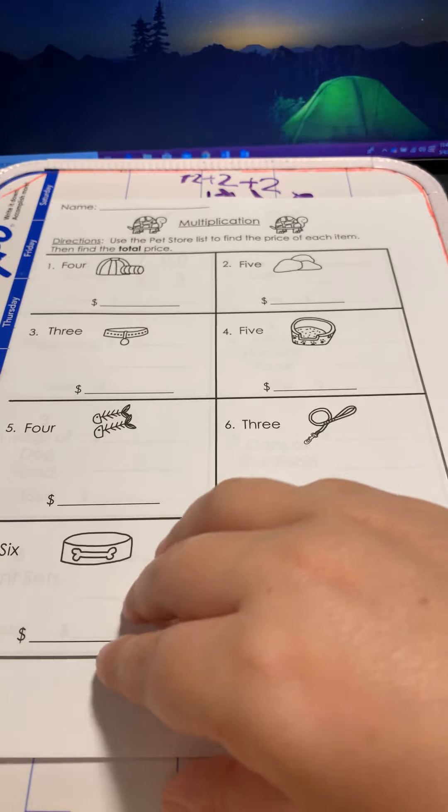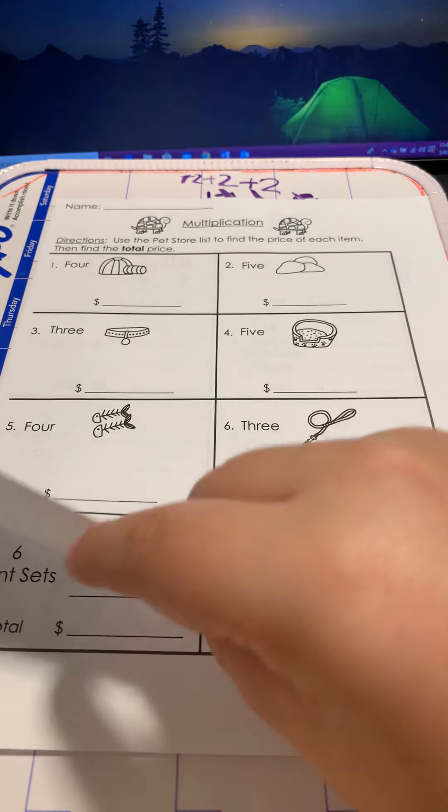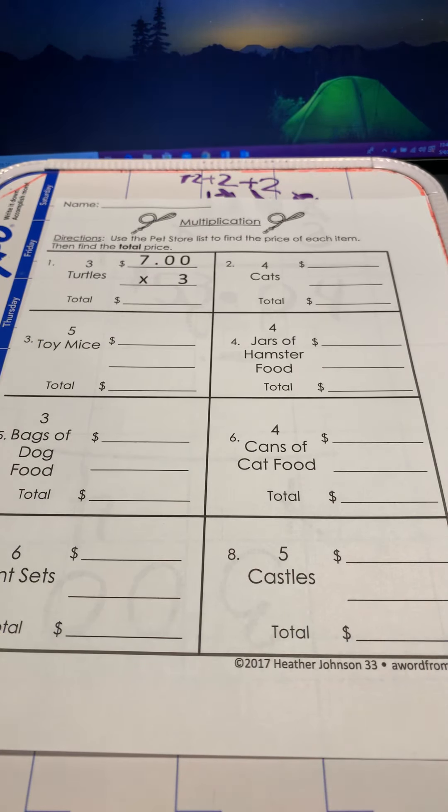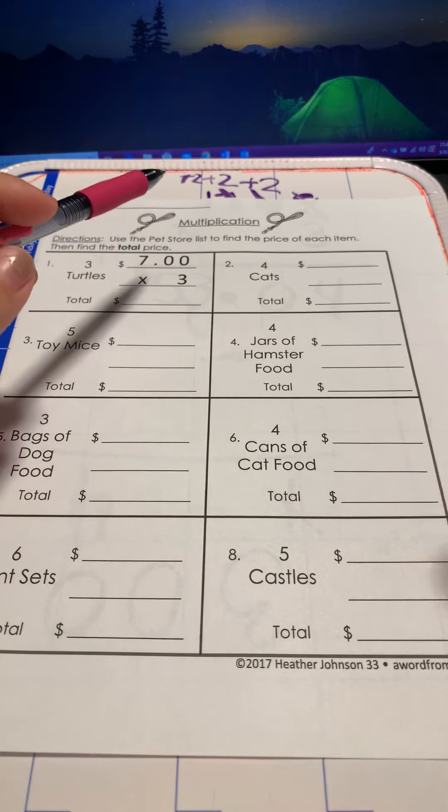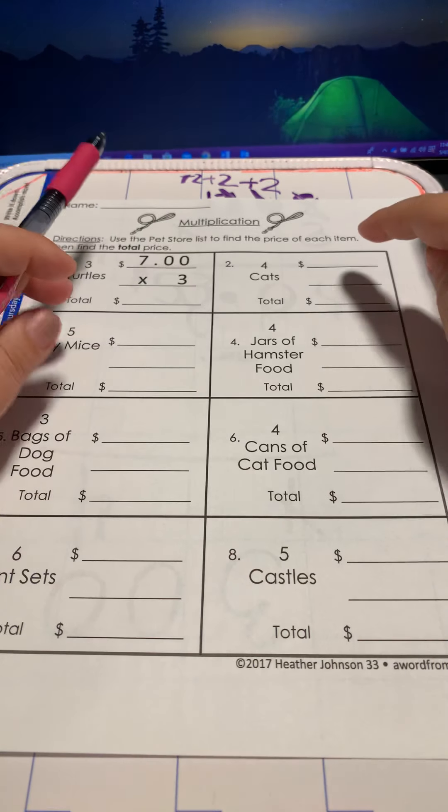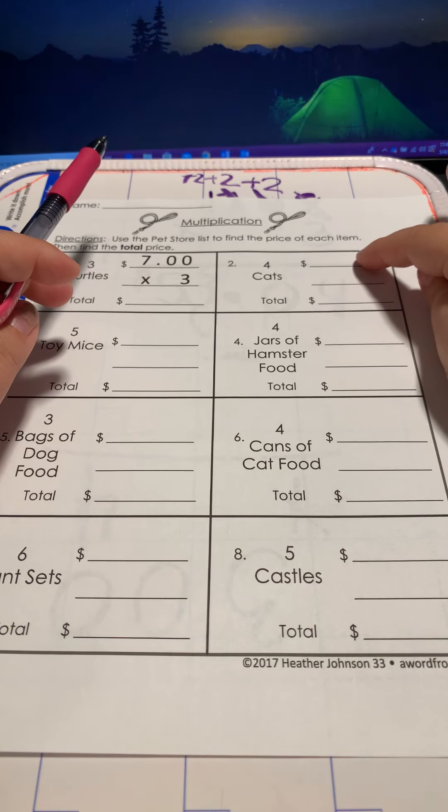The next page is almost the exact same thing we did yesterday. You're multiplying, and it tells you how many of each. So you're going to have the amount of what the animal or object is, and how many, and then put your answer.